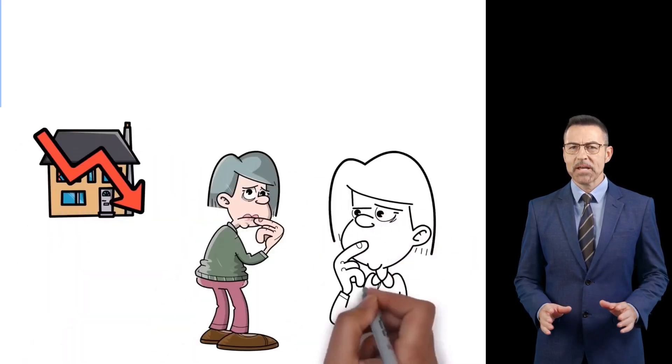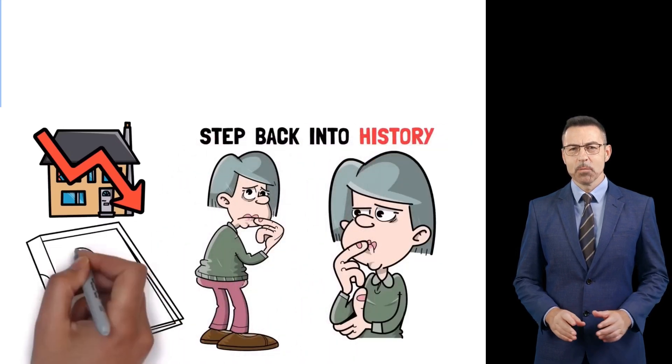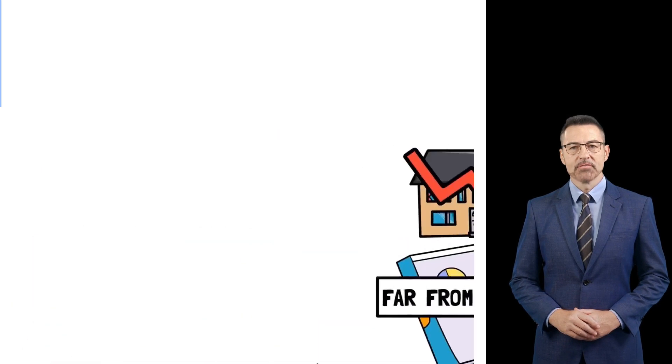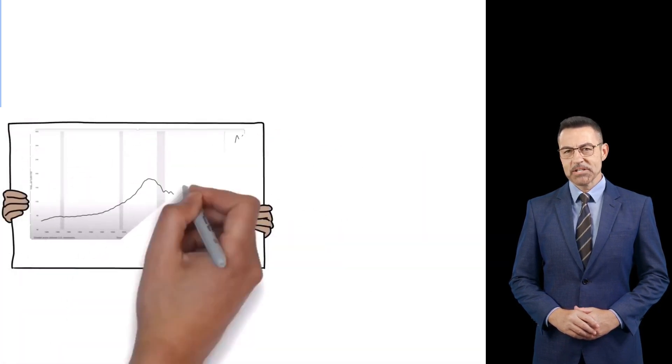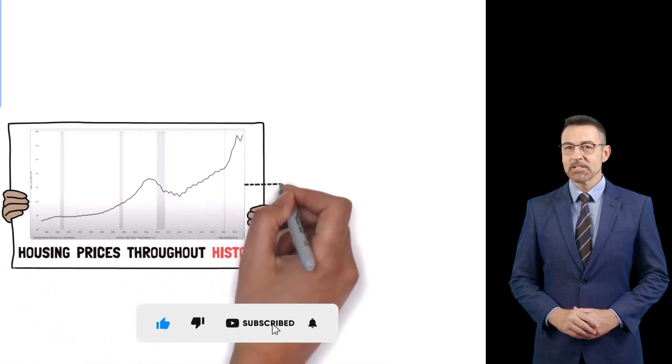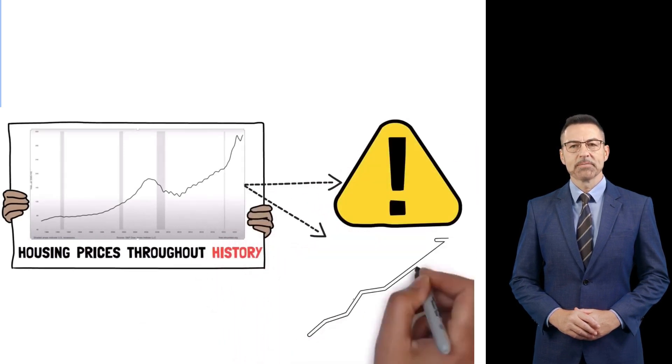And to show you why, we take one step back into history, looking at clear evidence that what is happening today is far from normal. You see a lot of people, when they show you a chart like this, they're showing you housing prices throughout history. But this chart has a severe flaw. It fails to capture the all-important aspect of inflation.